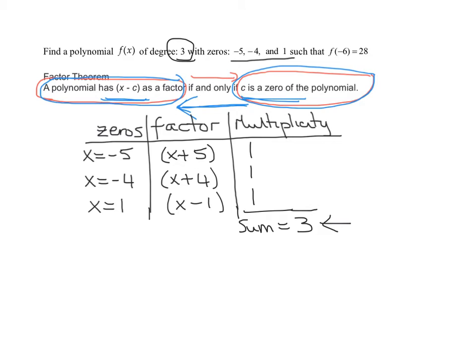Does that number match with what we were given? Yes. Therefore, we know that these zeros can only have multiplicity of 1. If one of them had a multiplicity of 2, my sum here would be more than the degree of the polynomial.